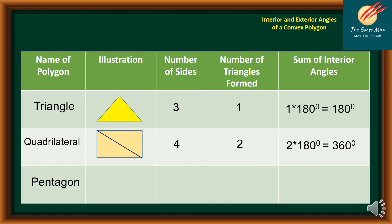Next, we have pentagon, which means we have five sides. We can form three triangles. Therefore, the sum of the interior angles is three times 180, which is equal to 540 degrees.